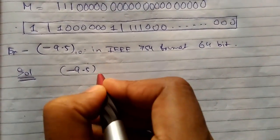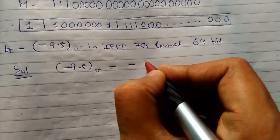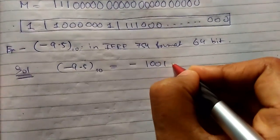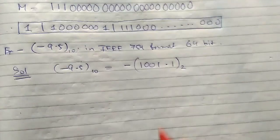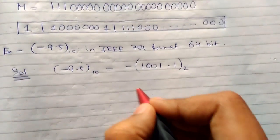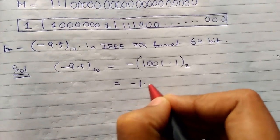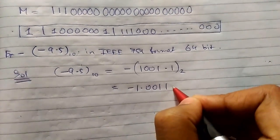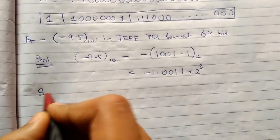For 9, the binary is 1001, and for 0.5 it is 0.1. So -9.5 converted to binary is -1001.1. Now convert into normalized form: 1.0011 × 2³.